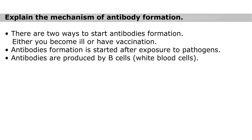Explain the mechanism of antibody formation. There are two ways to start antibody formation: either you become ill or have vaccination. Antibody formation is started after exposure to pathogens. Antibodies are produced by B cells, which are white blood cells.